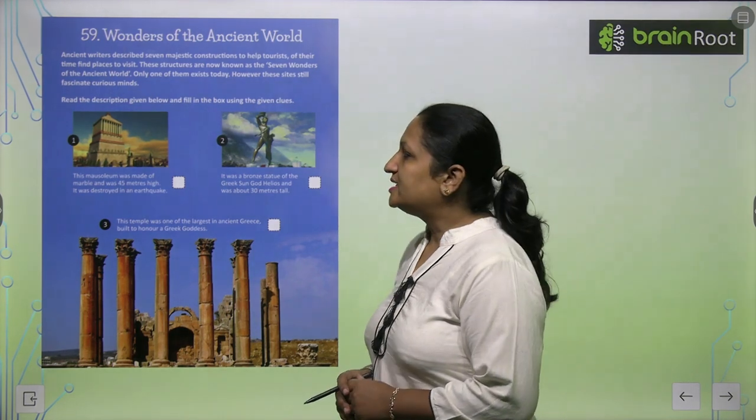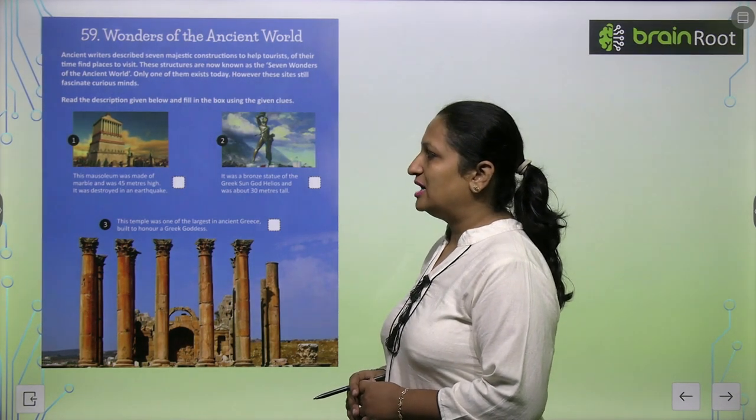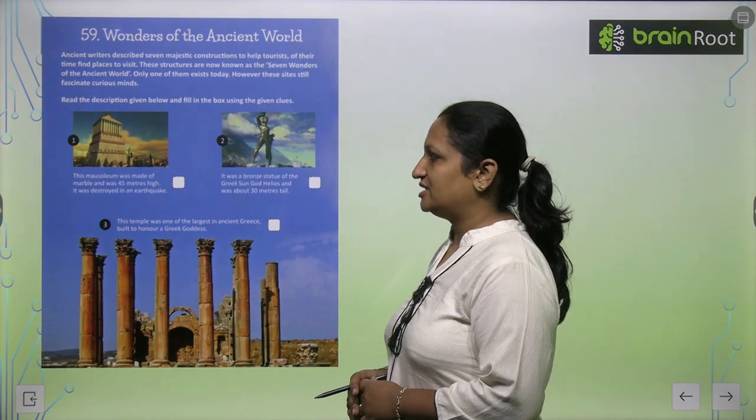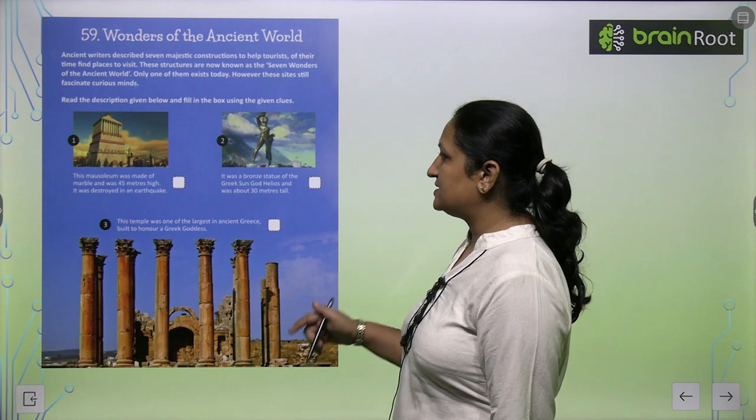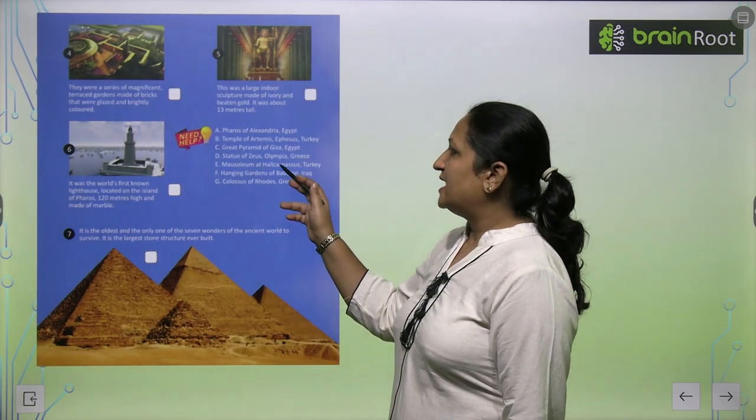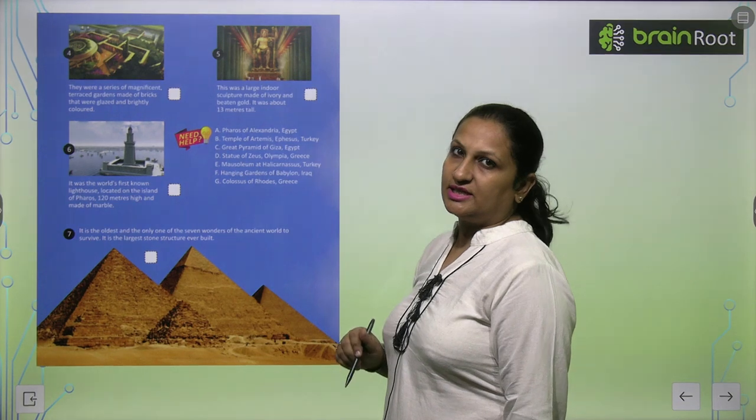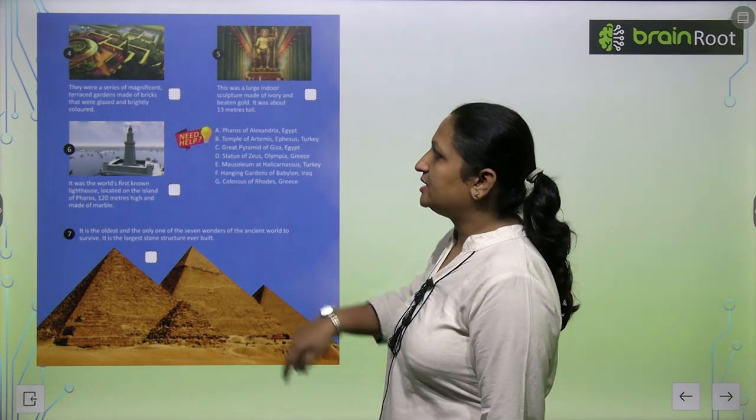Let's see them. This mausoleum was made of marble and was 45 meters high. It was destroyed in an earthquake. This is the Mausoleum at Halicarnassus, Turkey. So you can write here number E.